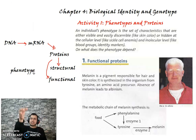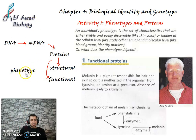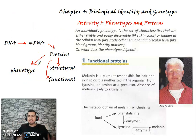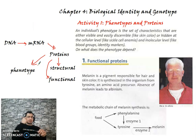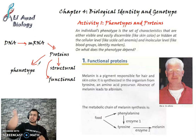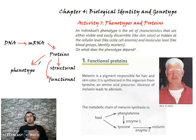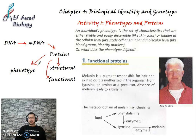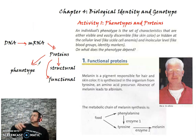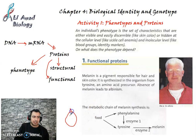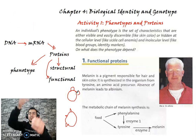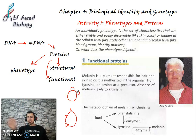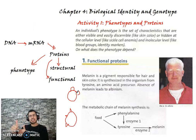Proteins are responsible for phenotype. For example, the color of eyes and skin is determined by protein. For blood group A, there is an antigen/protein A on the surface of the red blood cell; for blood group B, there is protein B. So proteins determine the phenotype — any change in a protein leads to a change in the phenotype.